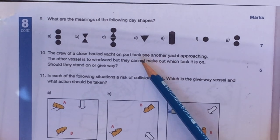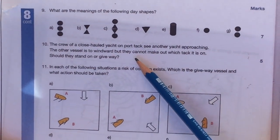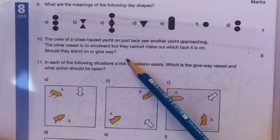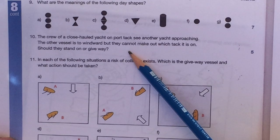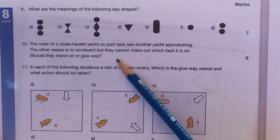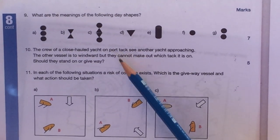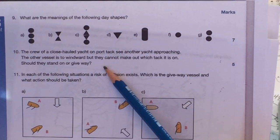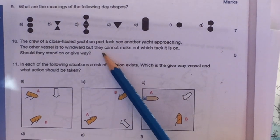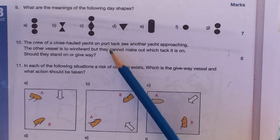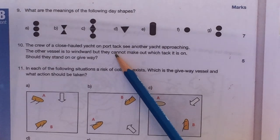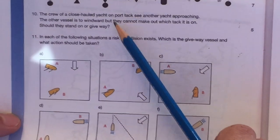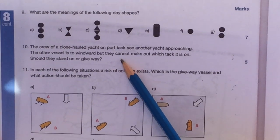The crew of a close-hauled yacht on port tack see another yacht approaching, the other vessel is to windward, so they cannot make out which tack it is on, but they cannot make out which tack it's on, should they stand or give way? Well, the boat that is to leeward, the sailboat that is to leeward, is always the stand-on vessel, so I would immediately say it doesn't really matter in this case. This boat here that spots the other boat, which is to windward, is the stand-on vessel. But of course I do understand that a port tack does give way, and if you can't see what tack the other person is on, the other boat is on, normally you would assume that they are the stand-on vessel, but in this case, this other boat is the windward boat, so I would, this boat here would be, the leeward boat would be the stand-on.